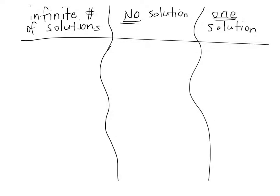I want you to give me an example of a linear system, so two linear equations that would represent an infinite number of solutions for the first one, two linear equations that would represent no solution, and two that would represent one solution.